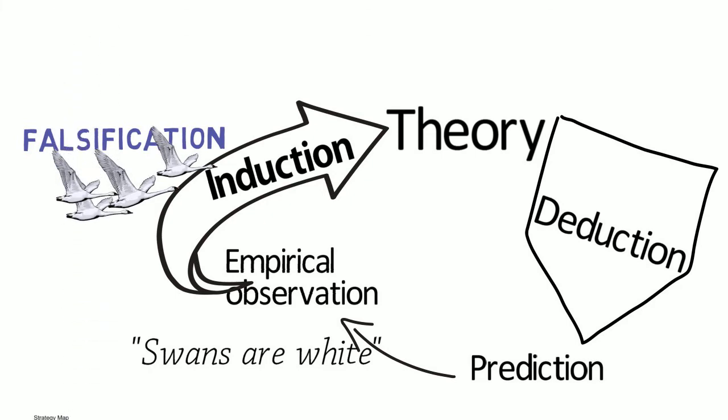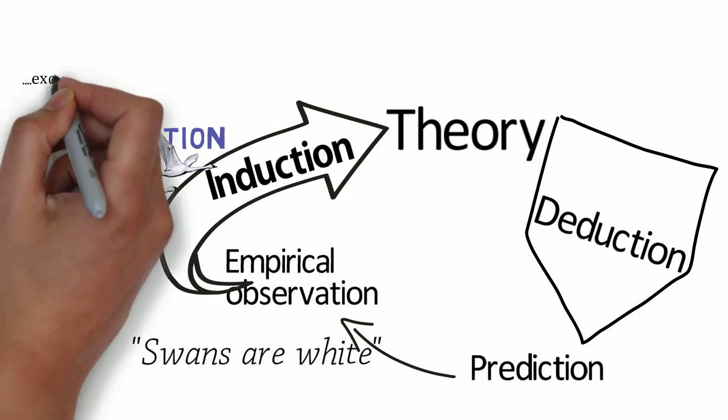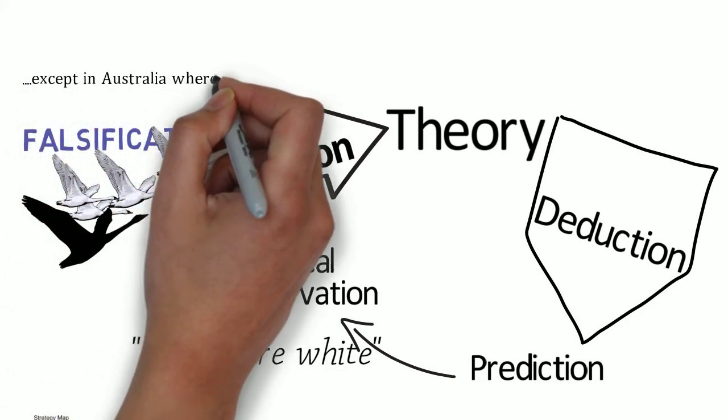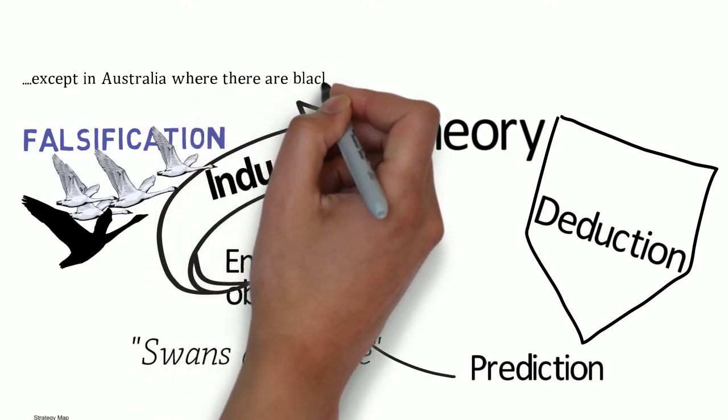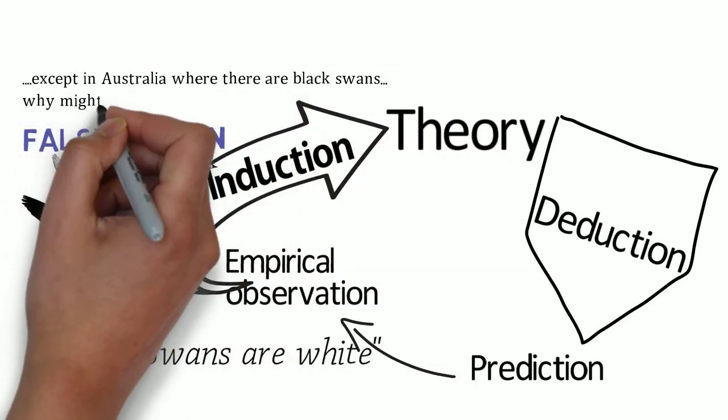If the prediction, or hypothesis, is not supported by what we see in the real world, then the theory is falsified. That means that there must be something that's not quite right in the existing theory. In a way, that's good. It means that the theory can be improved. It's the black swan that can challenge and increase what we know about the world.